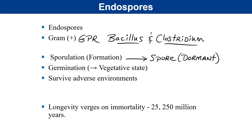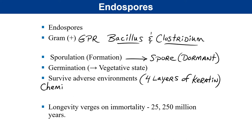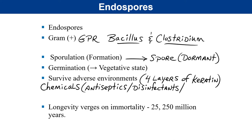Survival is facilitated by the spore being encased in four layers of a protein called keratin — the same protein that keeps our fingernails, hair, and skin strong. This keratin protects the endospore from all kinds of harsh environmental threats. Endospores are not defeated by antiseptics, disinfectants, or antibiotics; being dormant, they don't take in these chemicals, and keratin resists penetration.